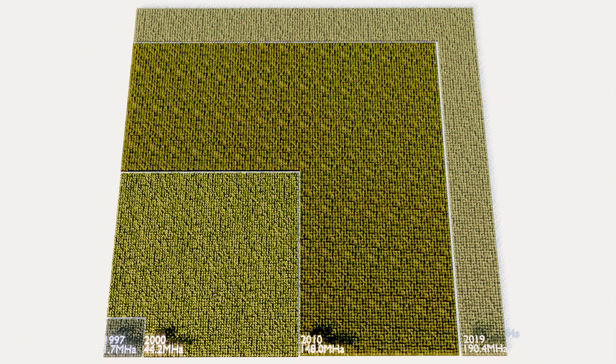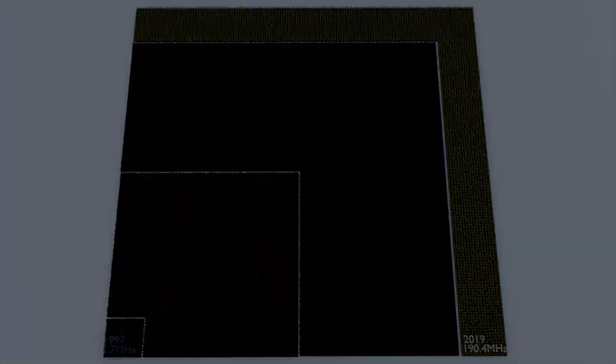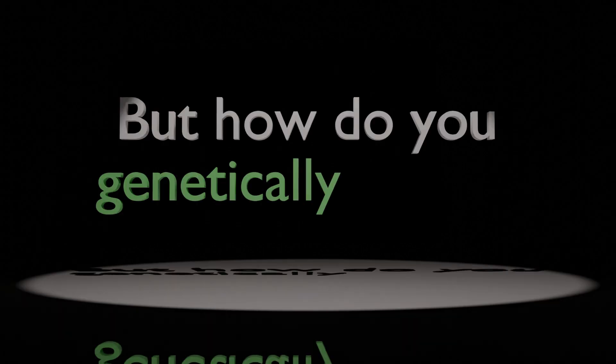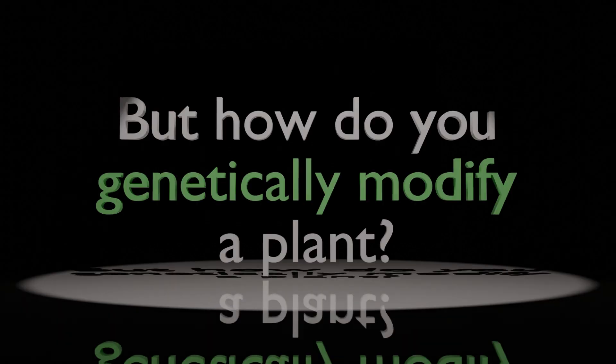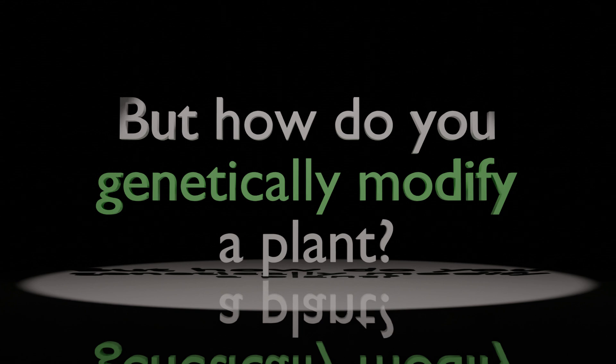However, genetically modifying organisms to change their traits wasn't necessarily new at the time. But how do you genetically modify a plant? After all, you can't just put a leaf on a petri dish and use an antibiotic to select for the mutation, right?